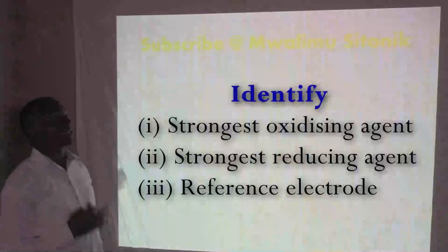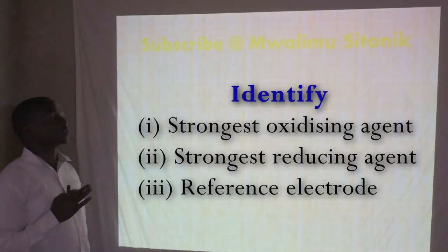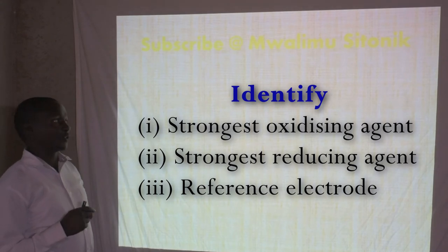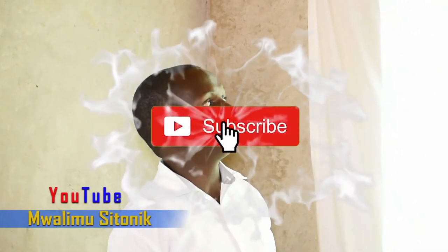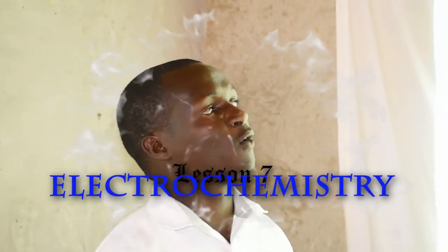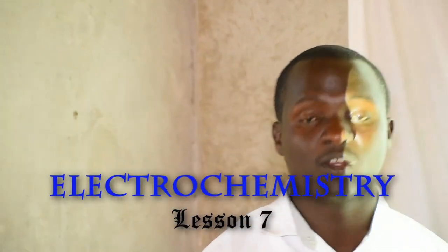That is the end of our presentation. Your assignment is to identify the strongest oxidizing agent, the strongest reducing agent, and the reference electrode. In future lessons, we are going to construct cells that give the highest EMF. Thank you — don't forget to subscribe to Alimus Tonic on YouTube for more lessons. That was lesson 7.